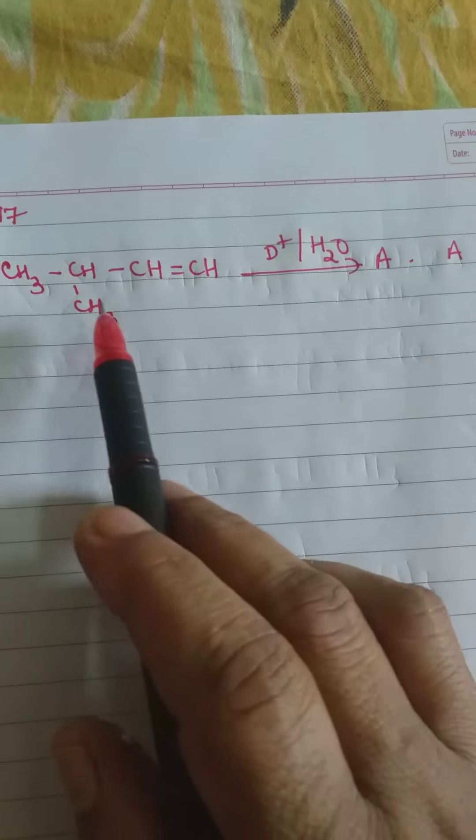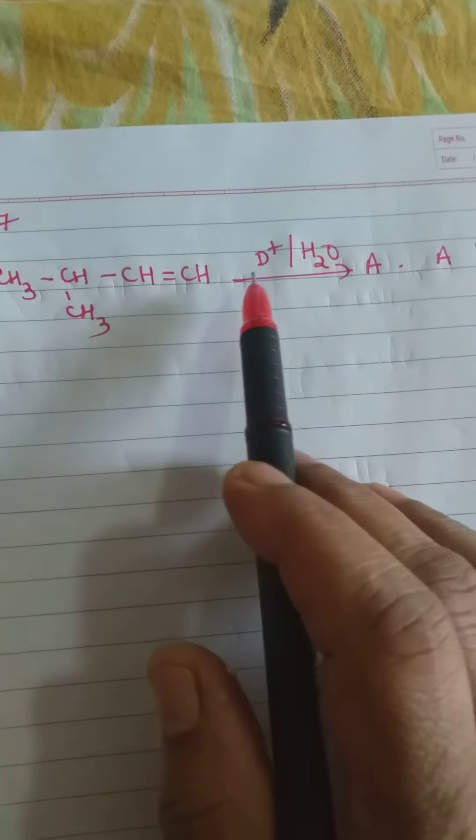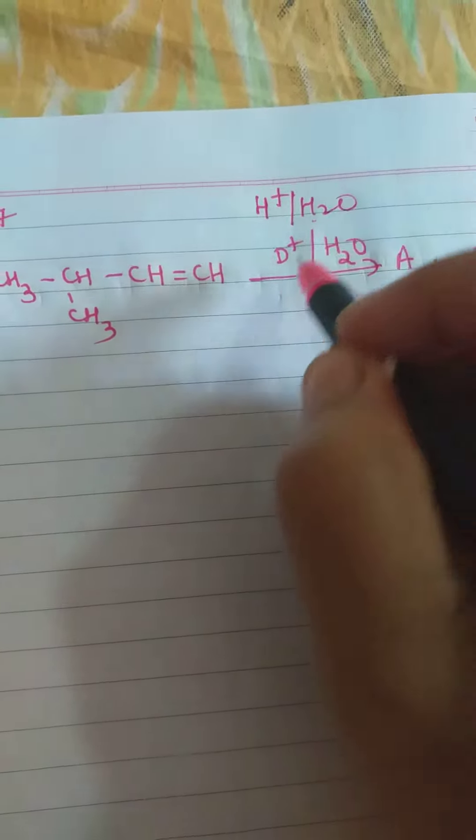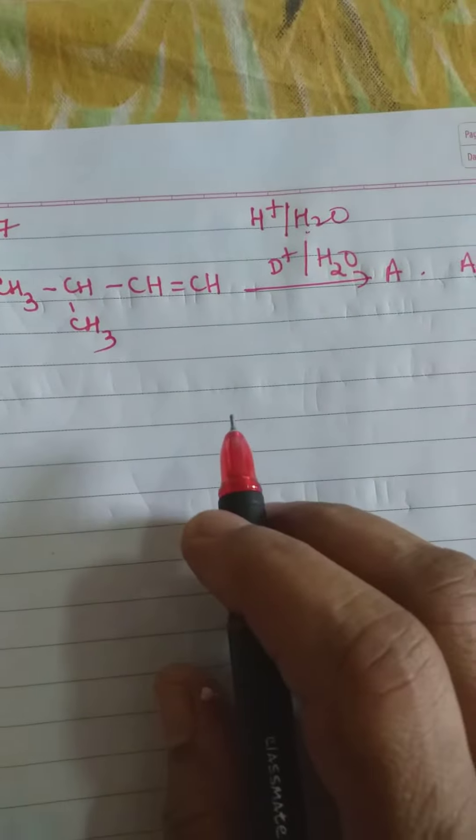Okay, question 17. This is a question here. D plus and H2O. D plus is nothing but an isotope of hydrogen, deuterium. So, H plus and H2O is acid hydrolysis. So, D plus and H2O is also acid hydrolysis.